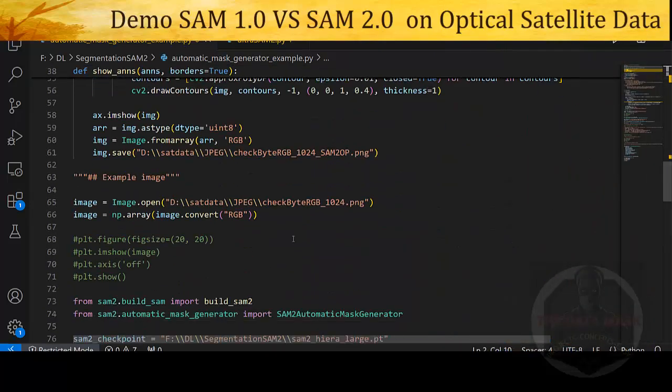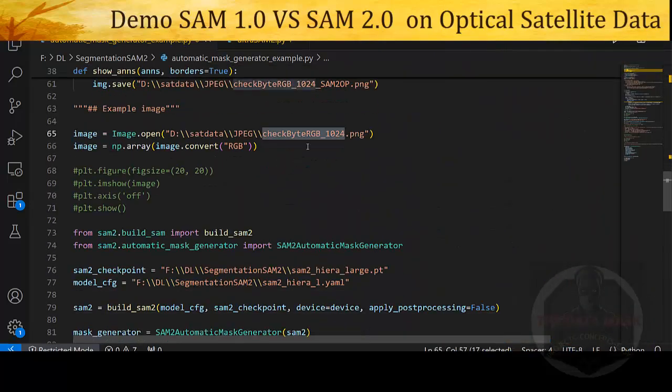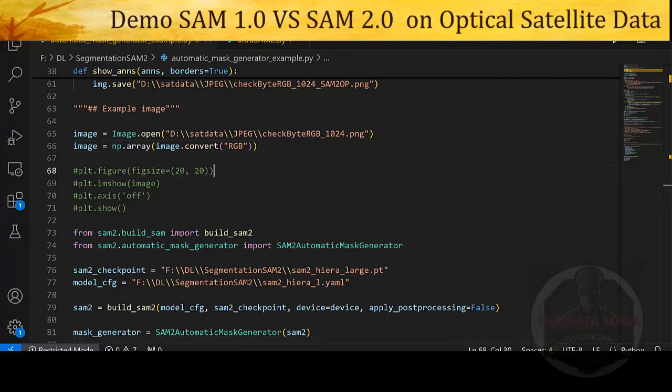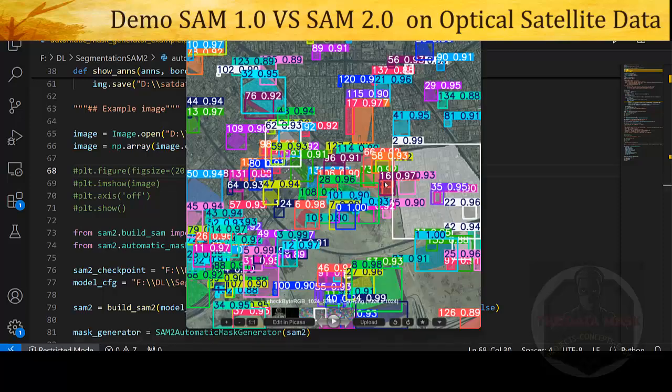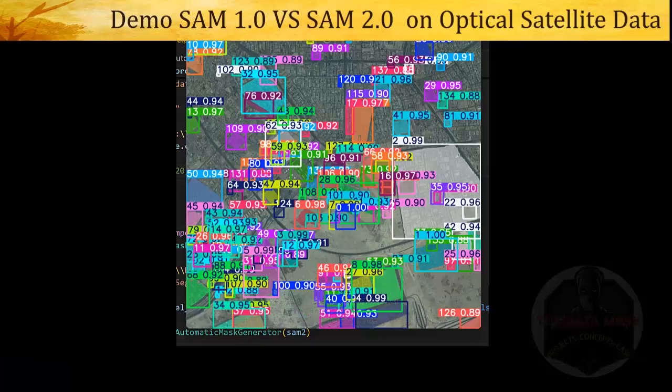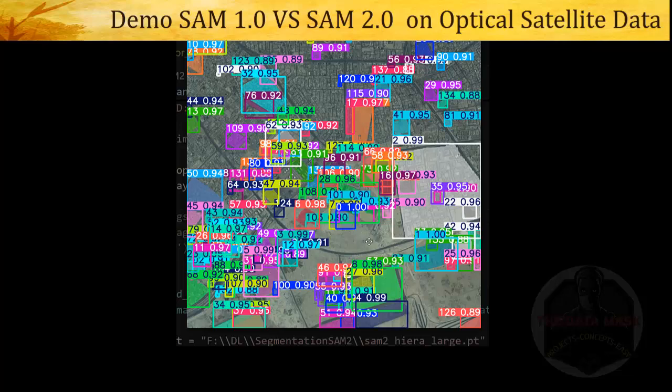Here I have executed one input image of 1024 by 1024. Let us compare the output of SAM 1 and SAM 2. The output which we are seeing here is the output of SAM 1 where the various segments are marked and their confidence scores are also listed.